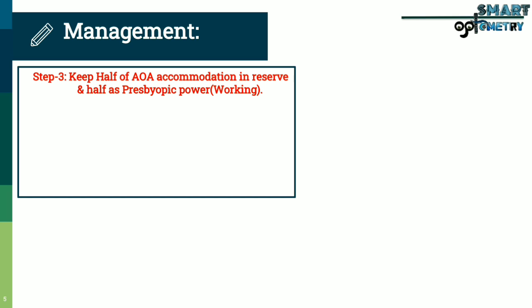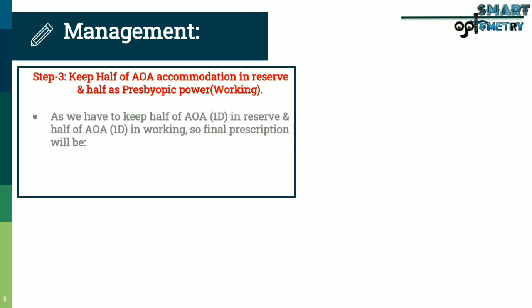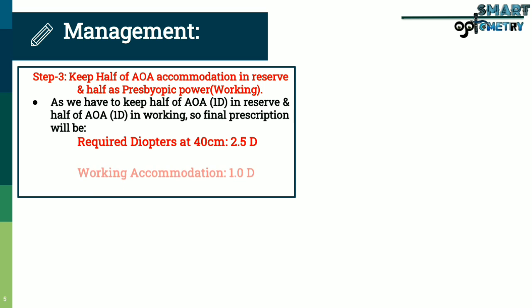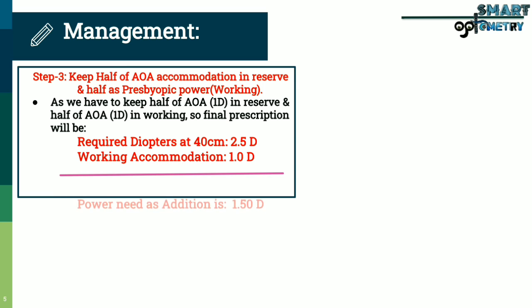Step 3: keep half of amplitude of accommodation in reserve and half as the presbyopic addition power. We have to keep half of amplitude of accommodation — 1 diopter — in reserve and use half in working. The required diopters to read at 40 cm is 2.5 diopters. So the power needed as addition is 1.5 diopters.